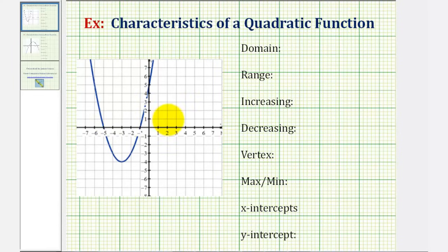In this problem we're given the graph of a quadratic function and asked to find all the key characteristics.